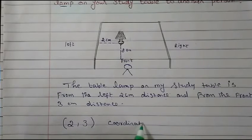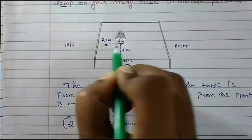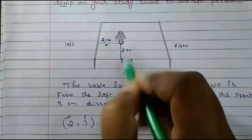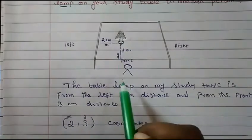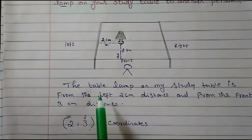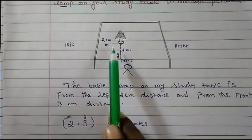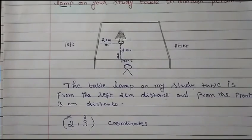In coordinates, horizontal is the x direction and vertical is the y direction. So if you consider this as x and this as y, you write the position as (2, 3). In words: two centimeters from the left and three centimeters from the front.